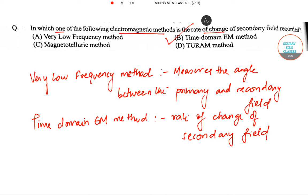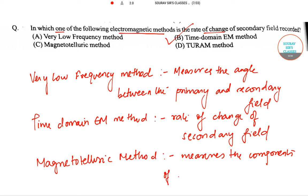However, we are still left with two more. So let us do it. So next is magnetotelluric method. And this particular method actually measures the components of electric and magnetic field.